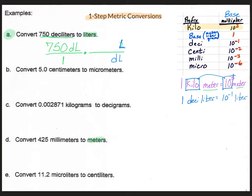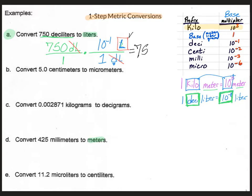We have deciliters on the bottom because it lined up — we wanted to make sure those cancelled out and we're left with liters on the top. What goes with the deciliter is the one, because all of the prefixes get a one. The multiplier goes with the base unit, so 10 to the negative 1 will be with the liters. On your calculator, you'll put 750 divided by 1, times 10 to the minus 1, divided by 1, which should give you the answer of 75. The units will now be liters — so 75.0 L.